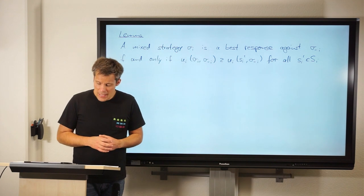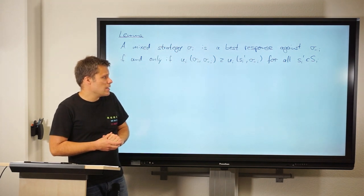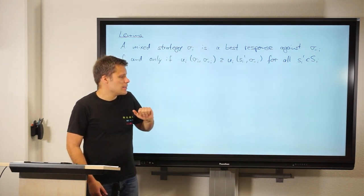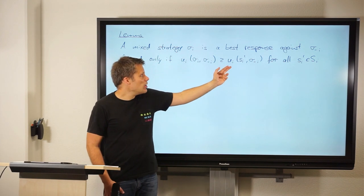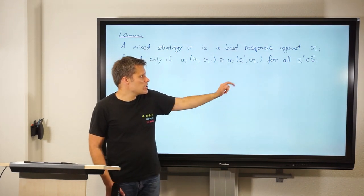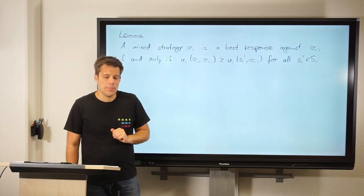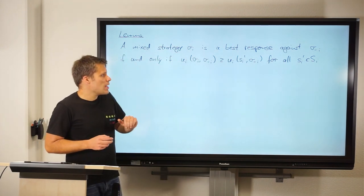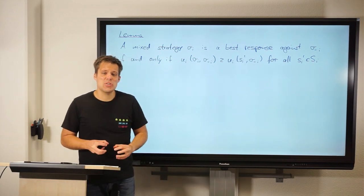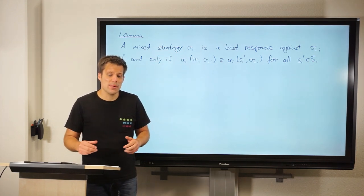What will also be useful today is a lemma we proved last time showing that a mixed strategy sigma_i is a best response against some choices of the other players sigma_{-i} if and only if the payoff that this player is getting under sigma_i is no less than what this player could get by switching to any pure strategy s_i'. So to show a mixed strategy is a best response, we only have to compare to deviations to pure strategies rather than all possible mixed strategies.